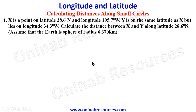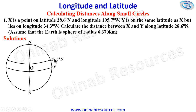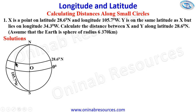In our solution we are going to sketch the diagram locating the points X and Y on the surface. We have the north pole, the center, and the equator. The first point X is 28.6 degrees north, so we draw the latitude 28.6 degrees north and longitude 105.7 degrees west. The point X is at the intersection of latitude 28.6 degrees north and longitude 105.7 degrees west.